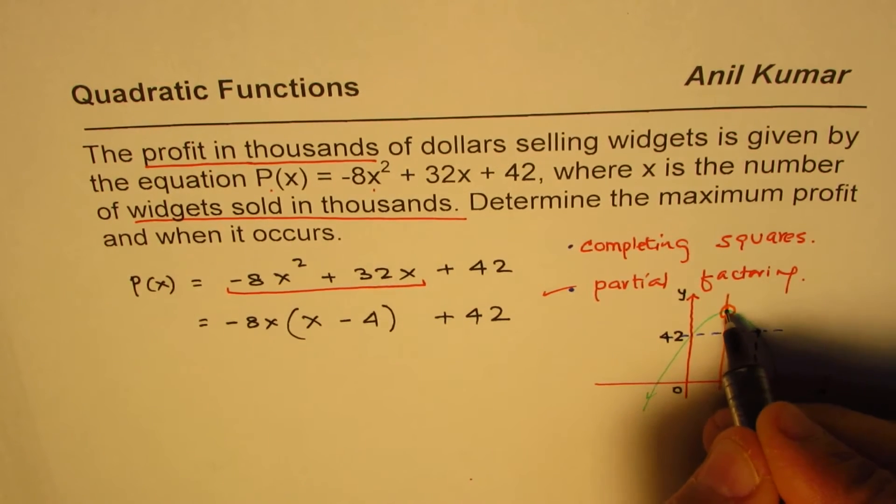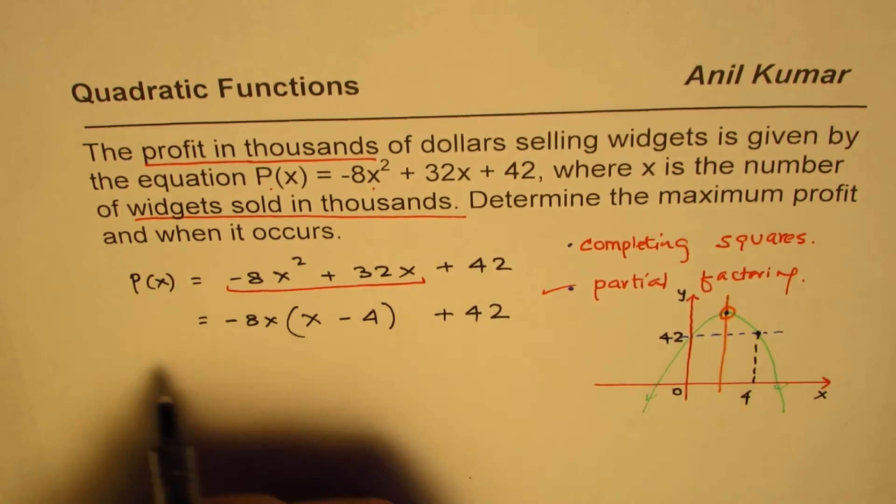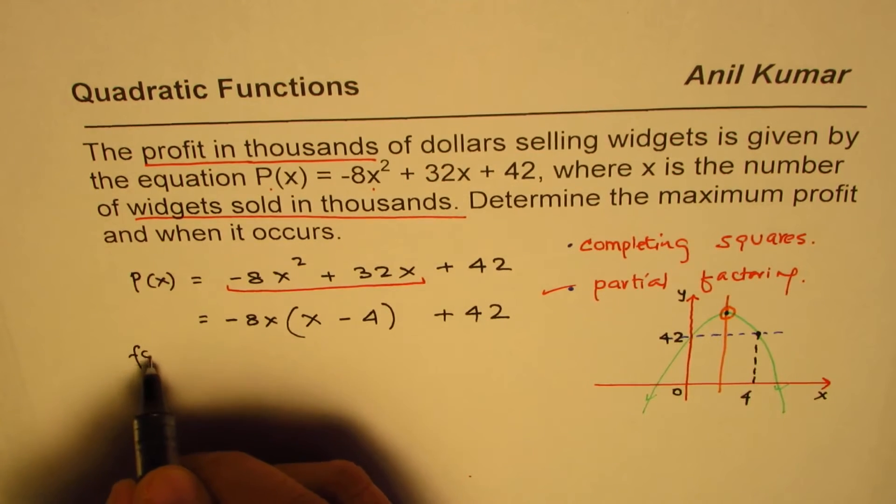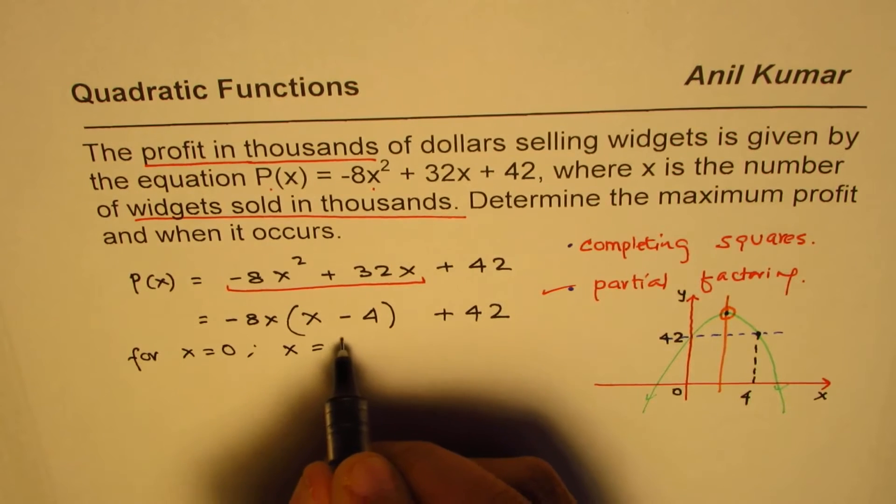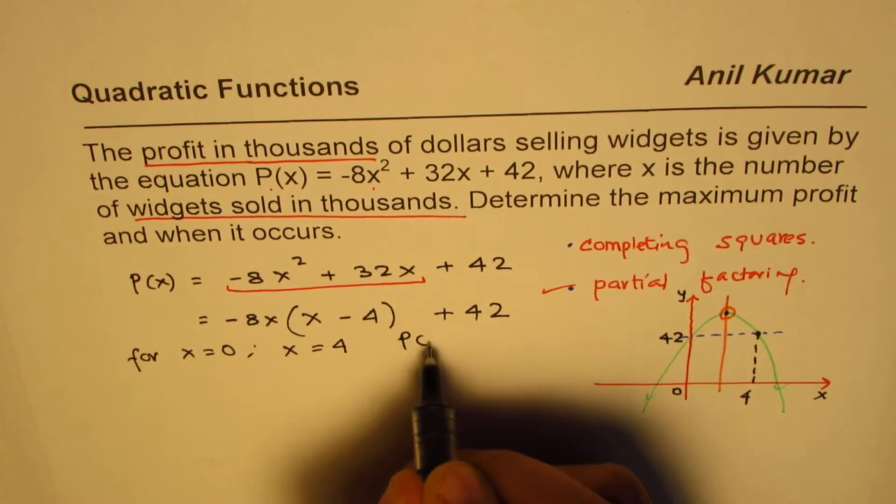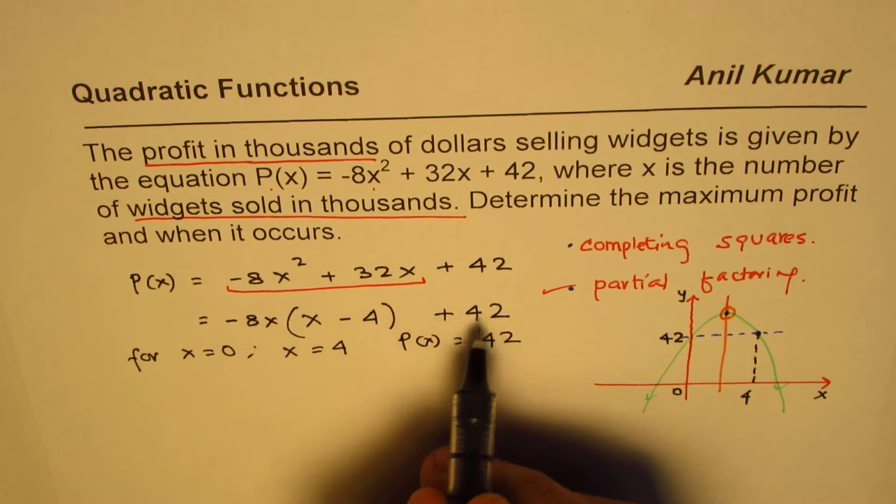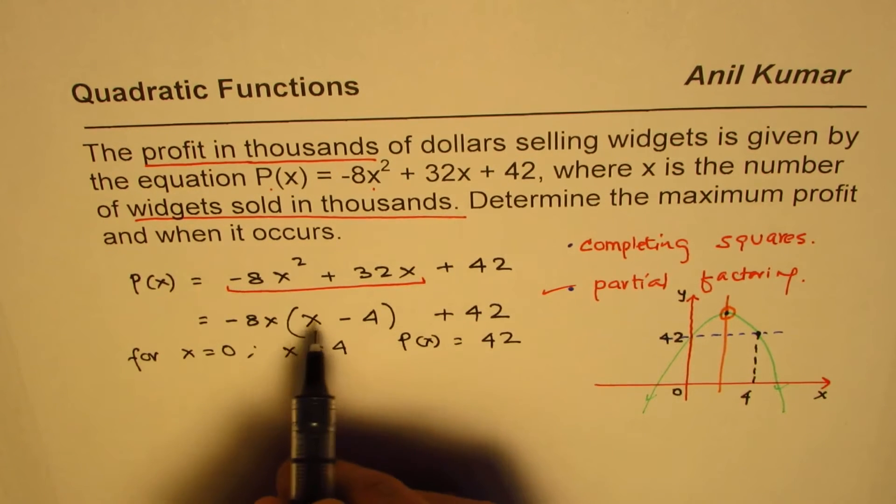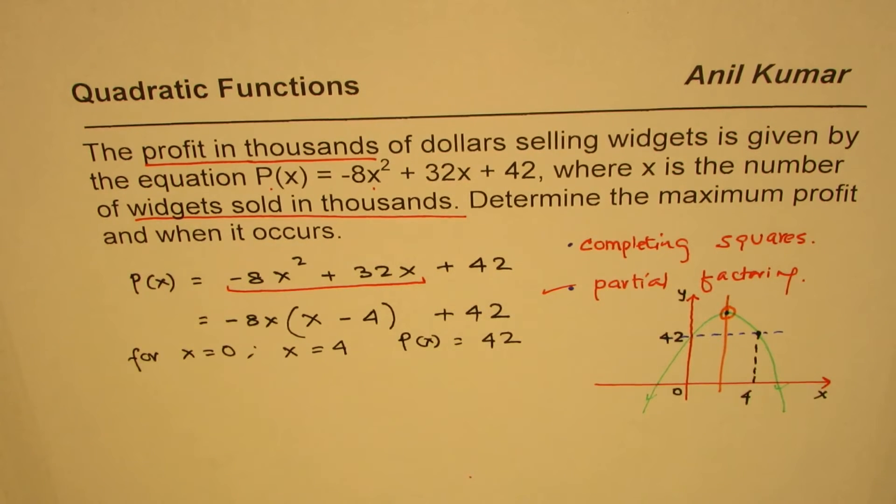So that is the axis of symmetry. So we can say this function is, so for x equals to 0 and x equals to 4, profit P(x) is 42. If I write 0 here I get 42. If I write 4 here, this term is 4 times 0, which is 0, so we get 42. So that gives us this line where P(x) equals to 42.